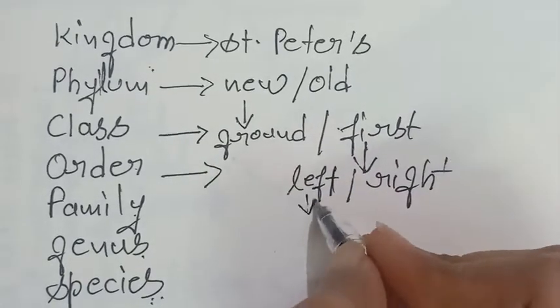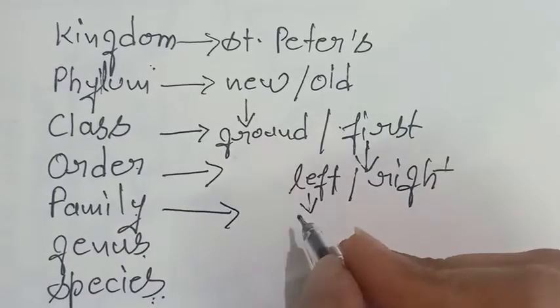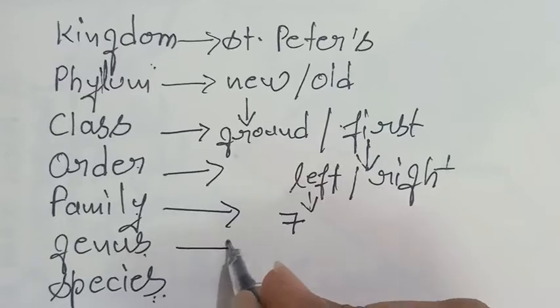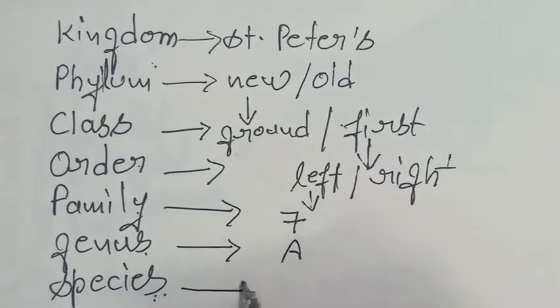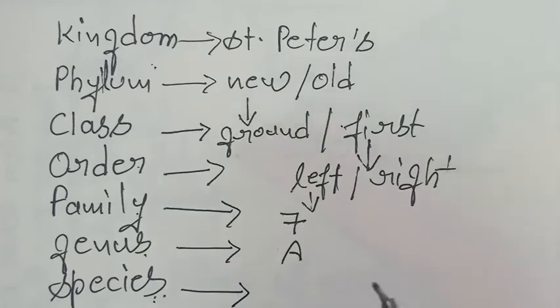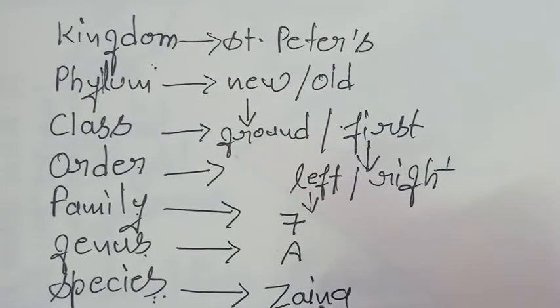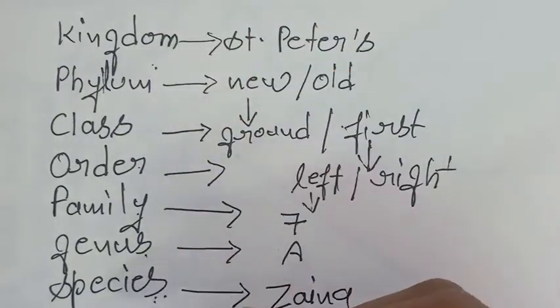Then in left and right wing, like you are in the left wing, so in family, in which class, seventh class. Then genus, in which section, A section. Then species, you are having a specific name, for example your name is Zyna. So this is the classification and these are the categories.